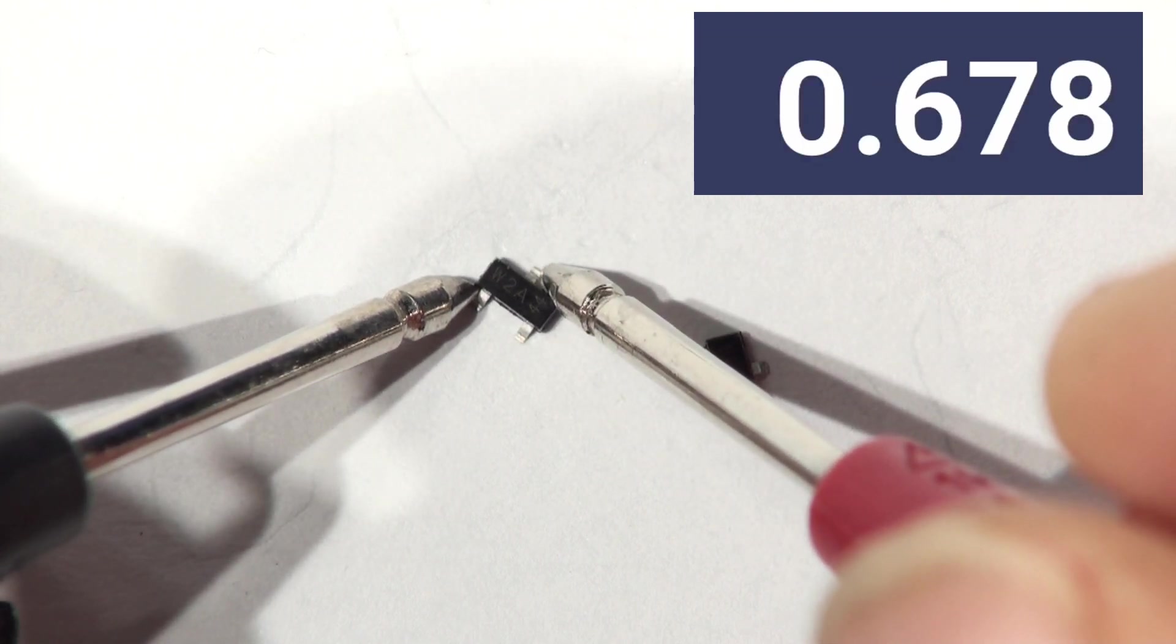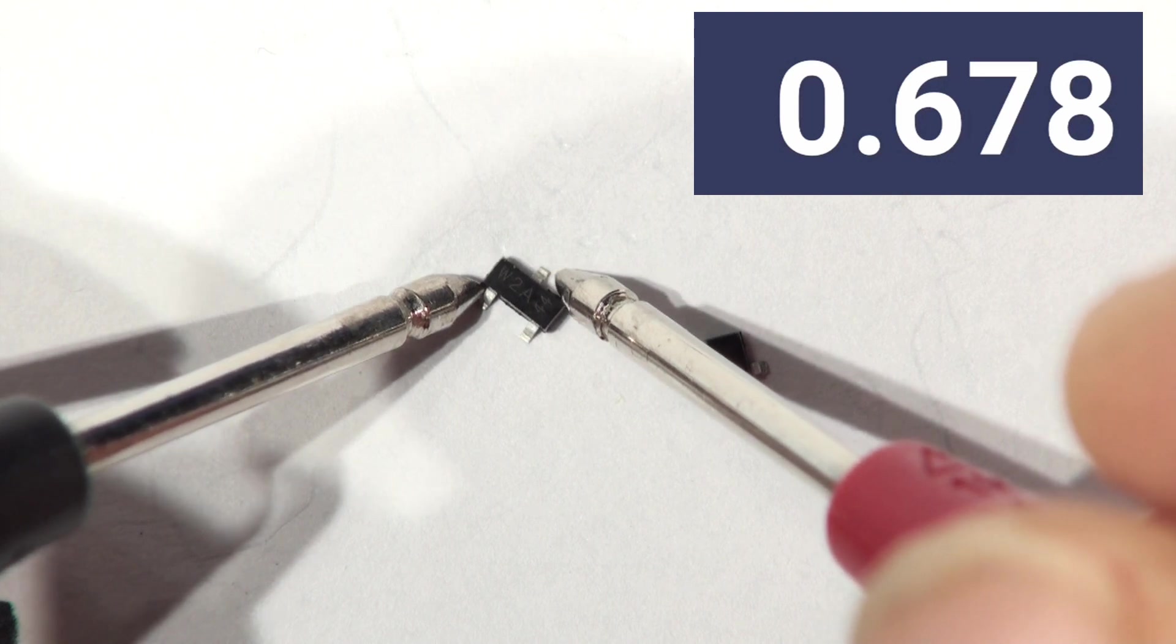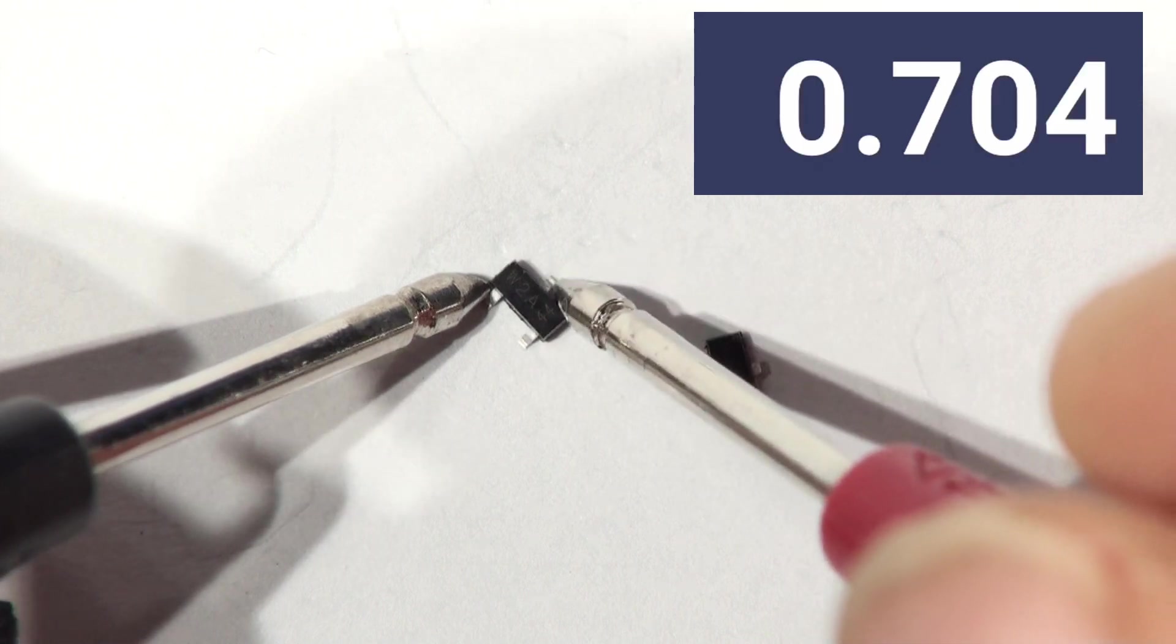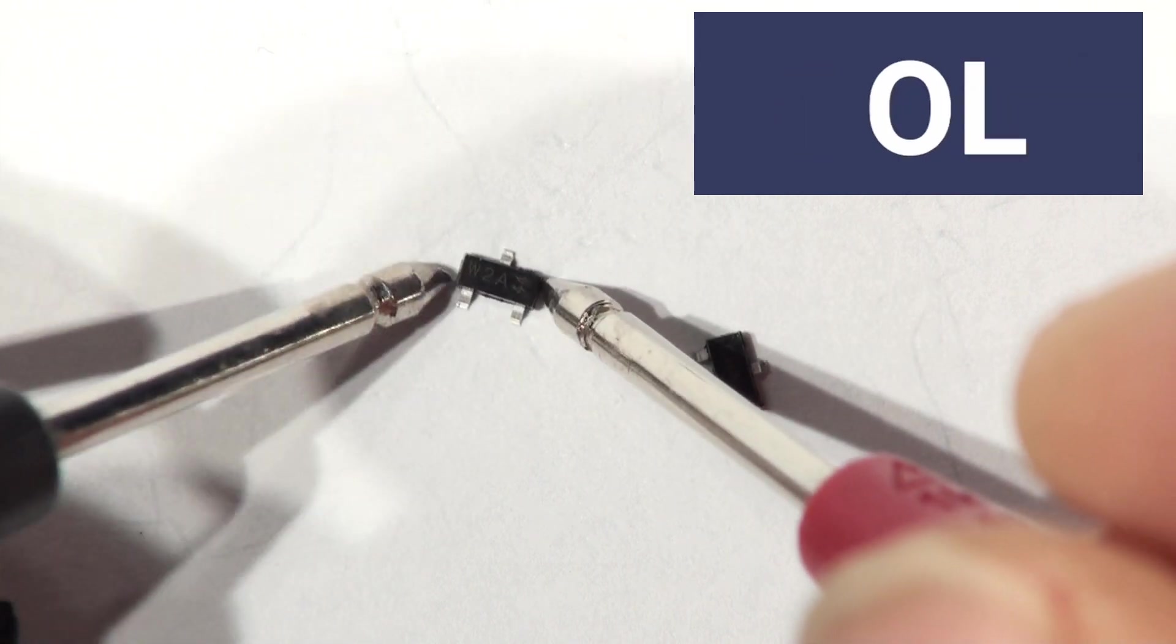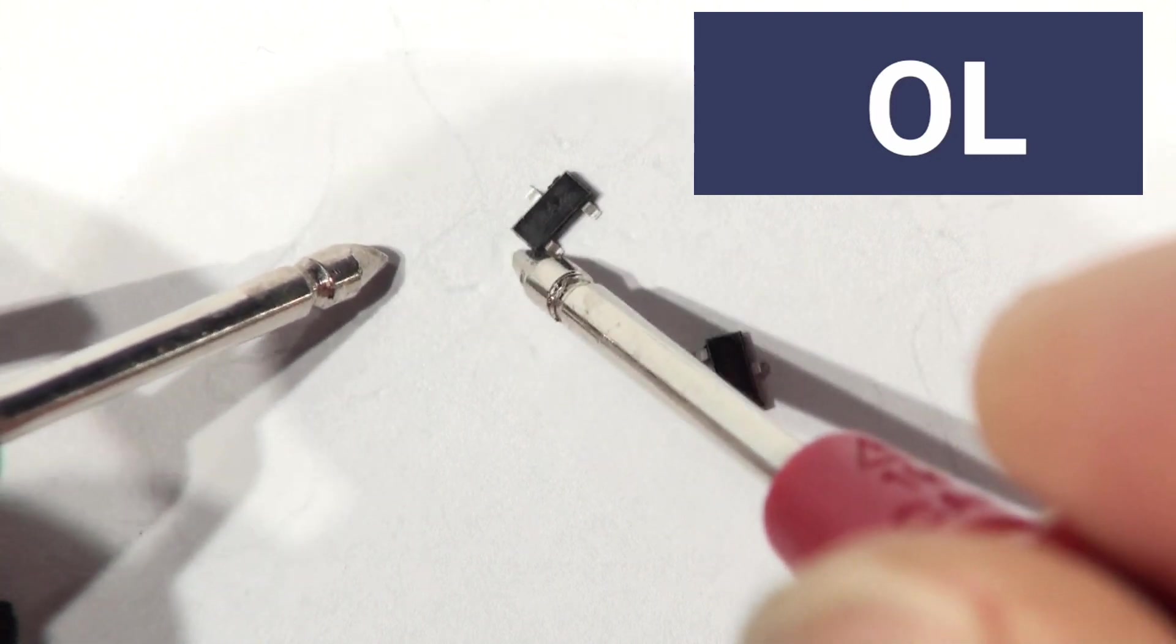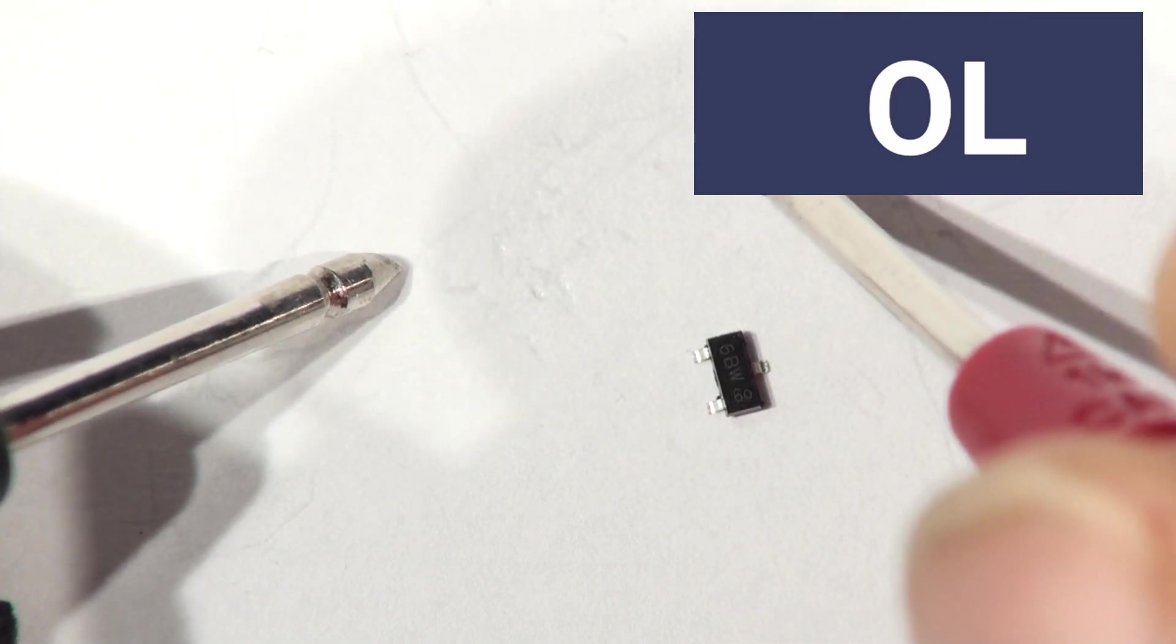So the one on the left, which is the black connection, negative, is on the base. So the negative connector of the meter is on the base. It must be, this is the PNP transistor. That's the emitter. That's the collector. And if I meter between the emitter and collector, there should be no connection. And there isn't. So that's the PNP, that one.